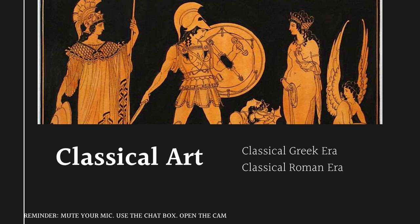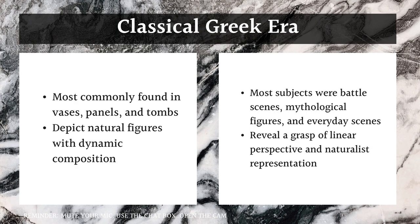Now let's talk about classical art, particularly classical Greek era and Roman era art. Classical Greek era paintings are most commonly found in vases, panels, and tombs. They depict natural figures with dynamic composition — meaning the figures appear to be in motion or action. Most subjects were battle scenes, mythological figures, and everyday scenes.